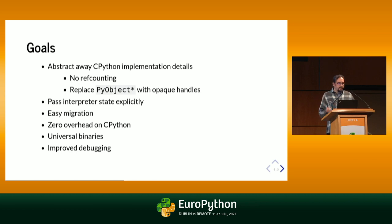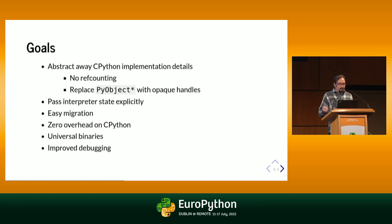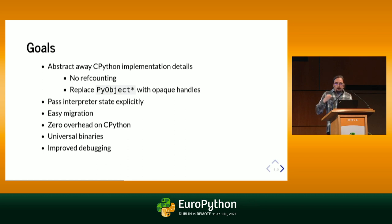At the same time, we want to make the transition as easy as it can possibly be. The new API must not have any overhead on CPython. We also want to provide new possibilities, such as having what we call universal binaries — meaning you compile your extension once and it works on all the interpreters and all the versions. We also have tools to help writing extensions with HPy.